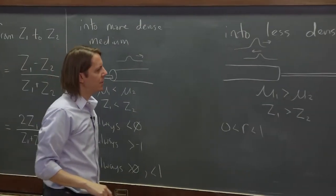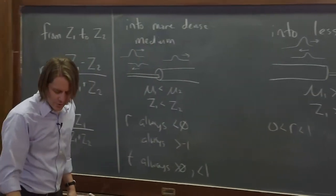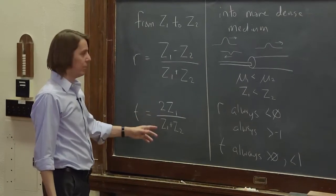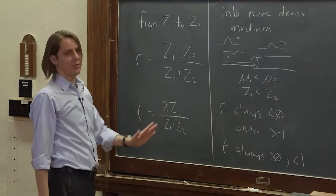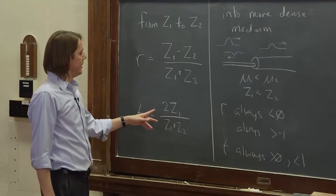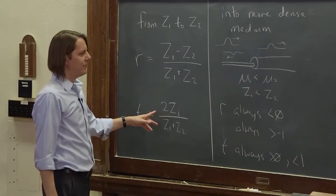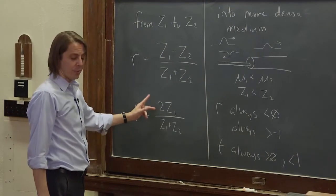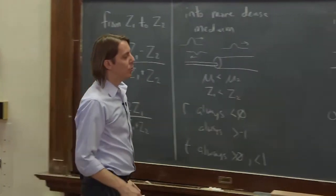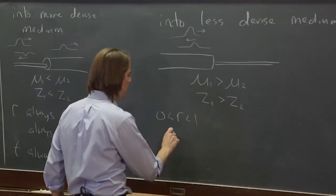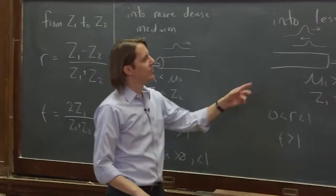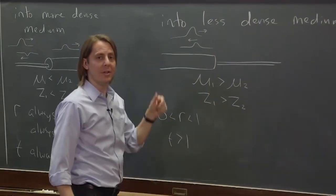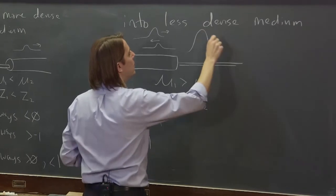And let's see on the transmission. Well, it's also always going to be positive. Because all these numbers are always positive. Transmitted waves are always positive. They never invert. And if z1 is greater than z2, then it's going to be greater than 1. So what that means is the wave that goes into the lighter medium will be at a higher amplitude than the input wave. So we would actually want to draw that one like this.